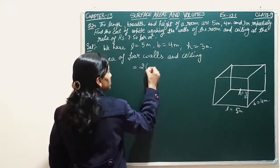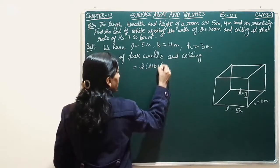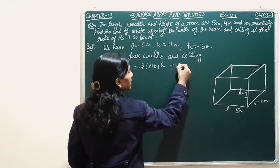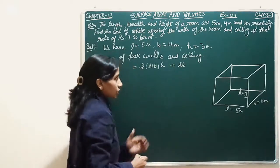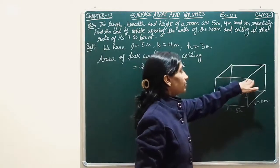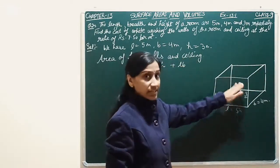This is equal to twice of L plus B into H. That means this curved surface area will be used. And the ceiling area is L into B. Because in the ceiling, H is not used. L and B are used. So L into B is the ceiling area.